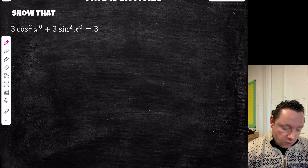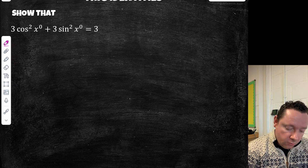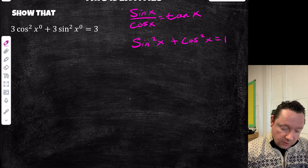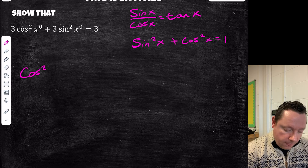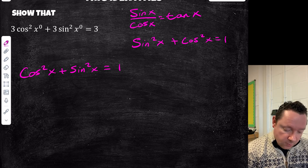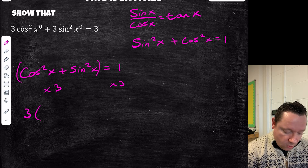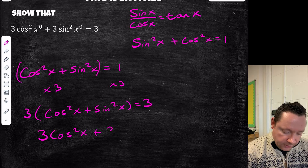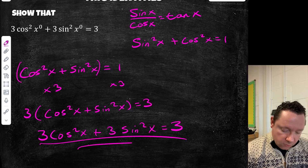Example 3: show that 3cos²x + 3sin²x = 3. This is quite an easy one. Starting with our trig identities: sinx/cosx = tanx, and sin²x + cos²x = 1. We use the second identity — cos²x + sin²x = 1. Since sin²+cos² is the same as cos²+sin², multiply both sides by 3: 3(cos²x + sin²x) = 3. Expanding the brackets: 3cos²x + 3sin²x = 3. Done.